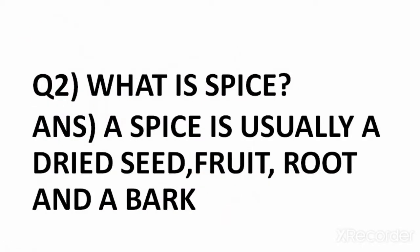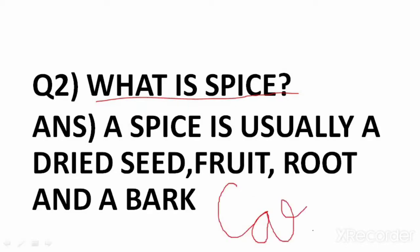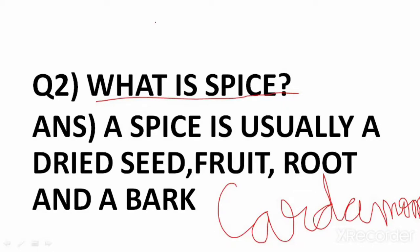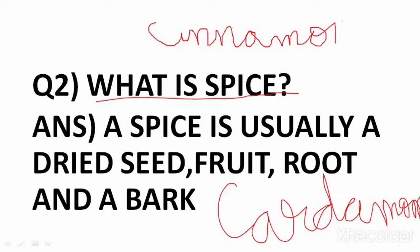Second question: What is spice? We had learnt in the lesson. I had shown you photos that green plants are grown and then the dried part — which are the dried seed, fruit, root, or bark — these can all be a dried part. Spices include cardamom, cinnamon, and black pepper. These are all spices.